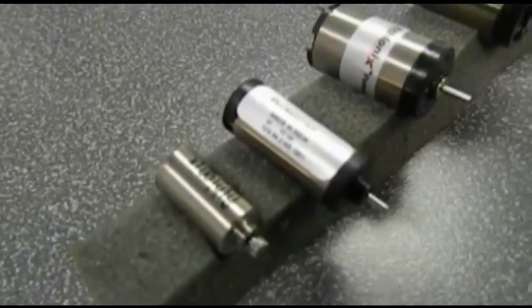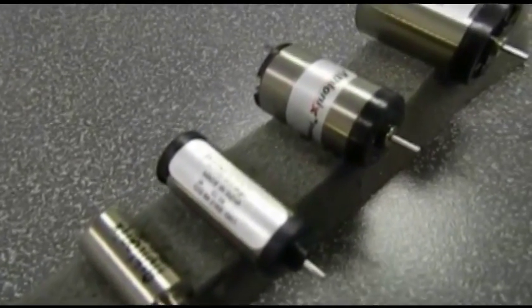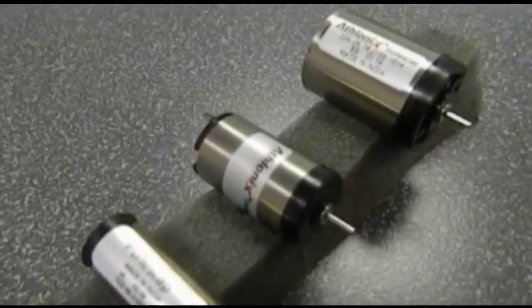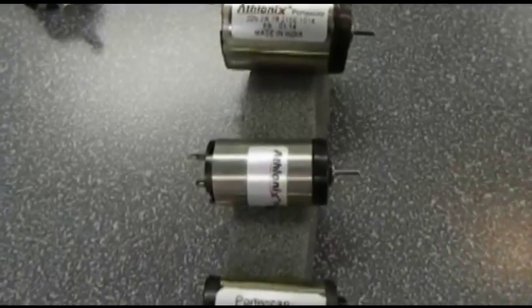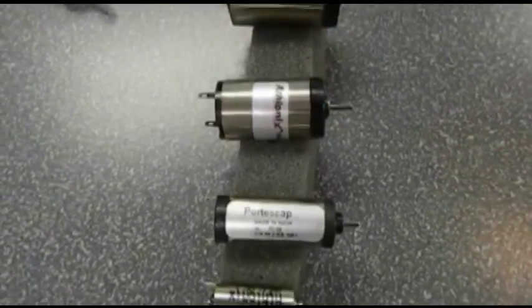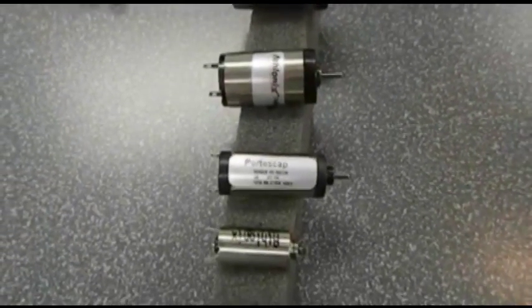These motors are capable of maximum continuous torque ratings up to 14 millinewton meters, with power ratings up to 15 watts. They are also available in various voltage ranges, as low as 3 volts and up to 48 volts, with speeds ranging up to 12,000 RPM.